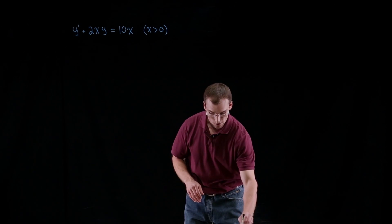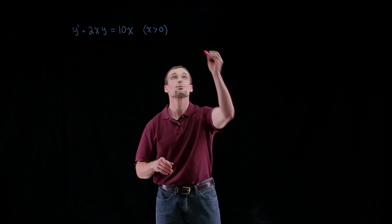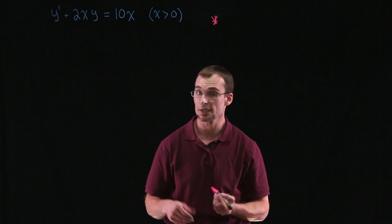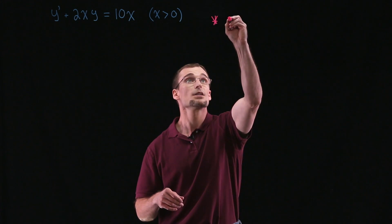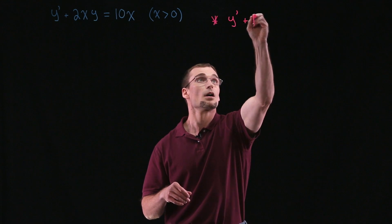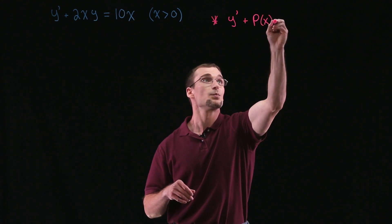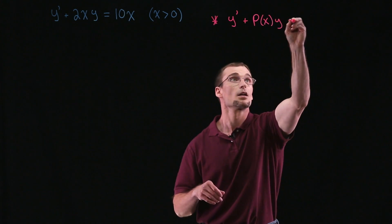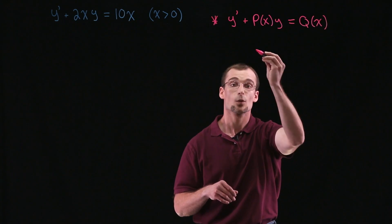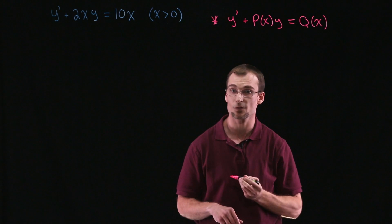So before we get started, let's start with what we know. What's the general form of a first order linear differential equation? It's something that looks like y prime plus P(x) times y equals Q(x), where P(x) and Q(x) are some continuous functions of x.